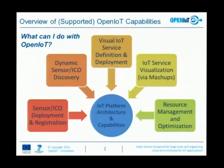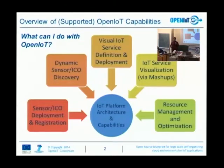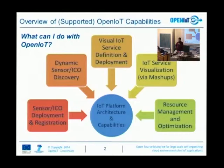First of all, OpenIoT is a means to capture data from various sensors, and when we say sensors we mean virtually anything. So this room could be a sensor that has some observation as an attribute — for example, the number of people attending this meeting could be an observation item that could be captured from this platform.